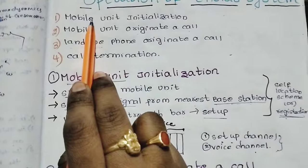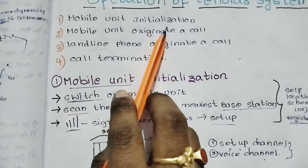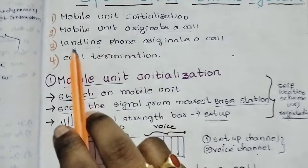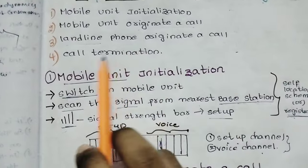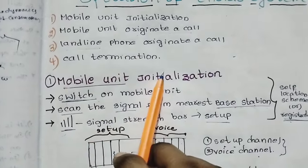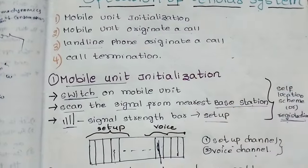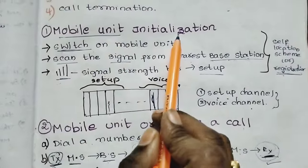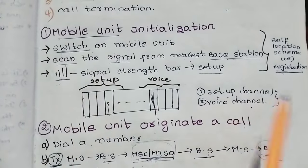First, we are going to initialize the call, then we are going to originate a call. Same for landline, we are going to originate a call. Then, once the call is up, we terminate it. So we are going to do this step by step. The first step is mobile unit initialization.